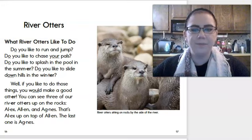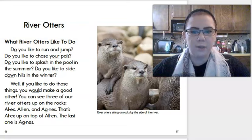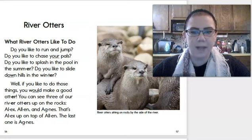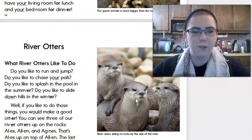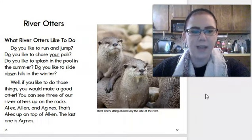Let's head over to the story. Read along with me if you can. River otters. What river otters like to do. Do you like to run and jump? Do you like to chase your pals? Do you like to splash in the pool in the summer? Do you like to slide down hills in the winter? Well, if you do like to do those things, you would make a good otter. You can see three of our river otters on the rock. Alex, Alan, and Agnes. That's Alex up on top of Alan and the last one is Agnes. So if you look in the picture, there's three river otters. And I was right. Those were names because they had capital A's. The caption says, River otters sitting on the rock by side of the river.